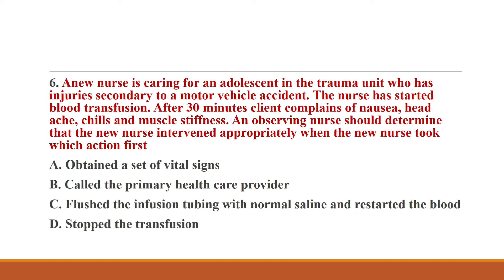Next question: a new nurse is caring for an adolescent in the trauma unit after a motor vehicle accident. The nurse has started a blood transfusion. After 30 minutes, the client complains of nausea, headache, chills, and muscle stiffness. An observing nurse should determine that the new nurse intervened appropriately when the new nurse took which action first? Options: A) obtained vital signs; B) called the provider; C) flushed tubing with normal saline and restarted blood; D) stopped the transfusion. The correct answer is D — stopped the transfusion.